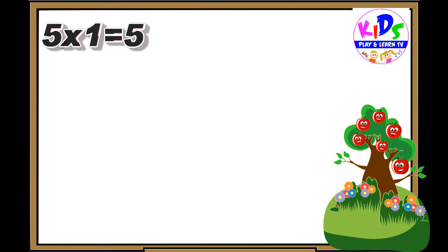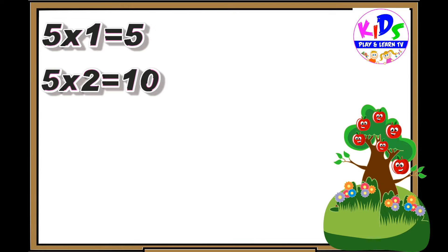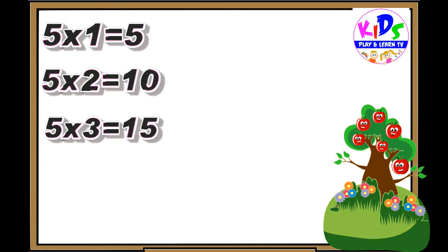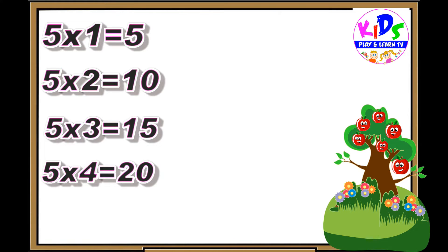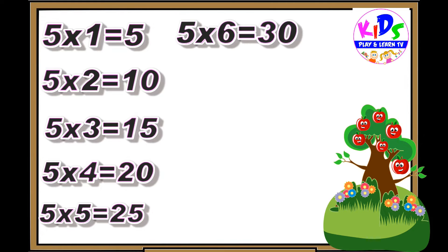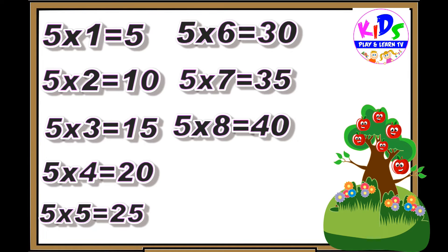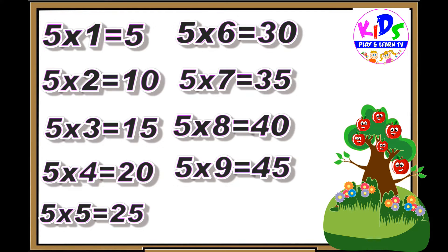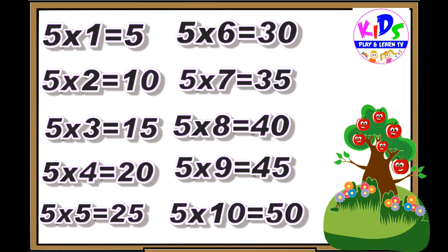Hey kids, let's repeat. Five ones are five. Five twos are ten. Five threes are fifteen. Five fours are twenty. Five fives are twenty-five. Five sixes are thirty. Five sevens are thirty-five. Five nines are forty-five. Five tens are fifty.